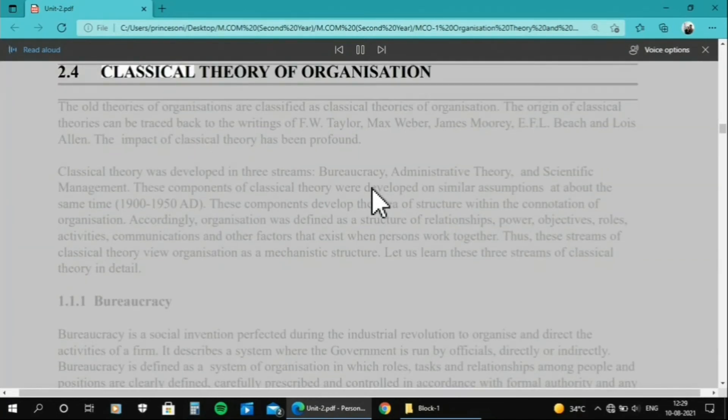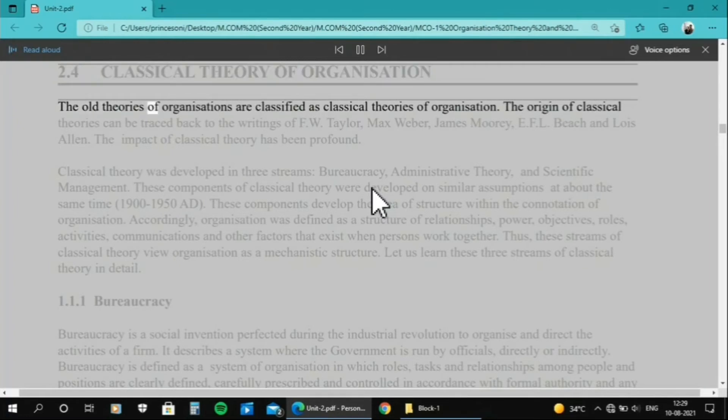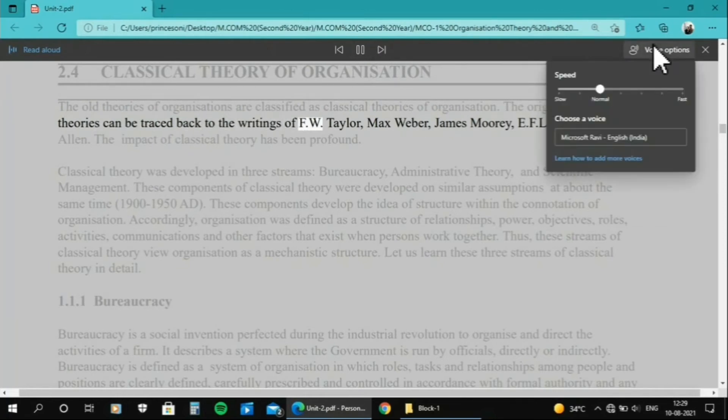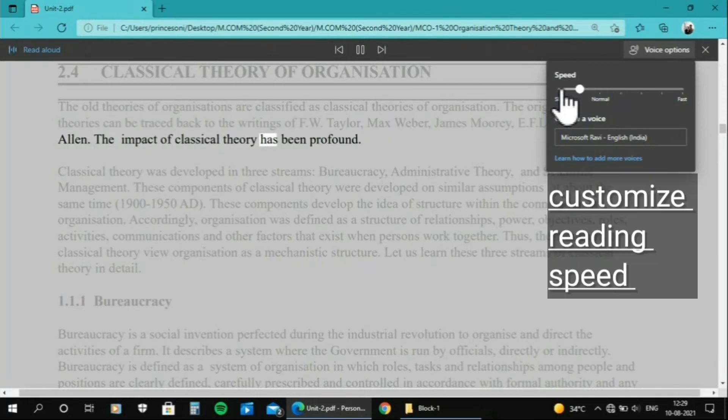2.4 Classical Theory of Organization. The old theories of organizations are classified as classical theories of organization. The origin of classical theories can be traced back to the writings of F.W. Taylor, Max Weber, James Mooney, E.F.L. Beach and Lois Allen. The impact of classical theory has been profound.